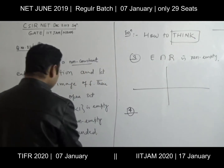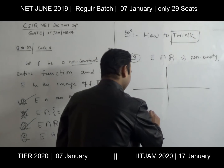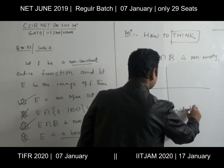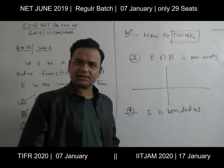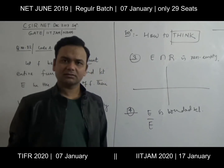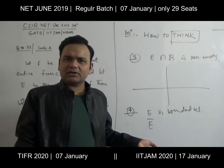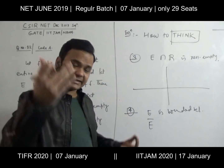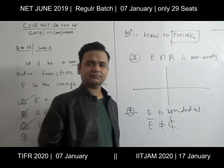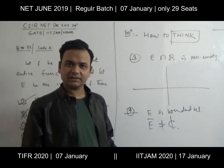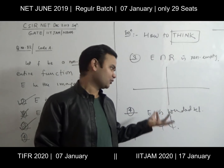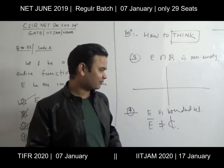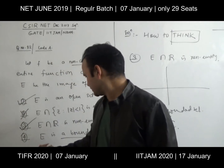Fourth option: E is a bounded set. If E were bounded, then its closure would be compact — bounded and closed means compact. But the range set cannot be compact because C is not compact — it is unbounded. By Picard's theorem the range is essentially all of C, so it is never going to be bounded. Hence this option is false.